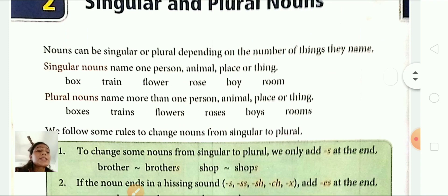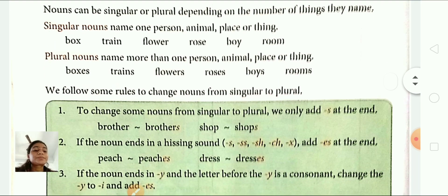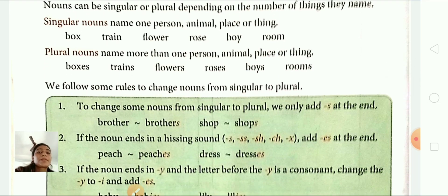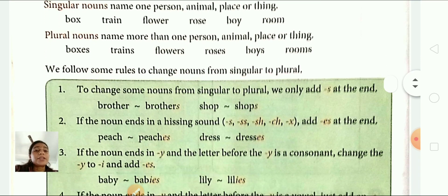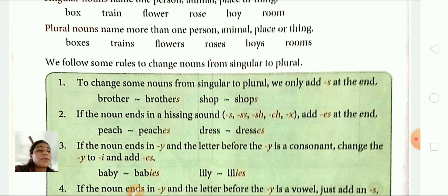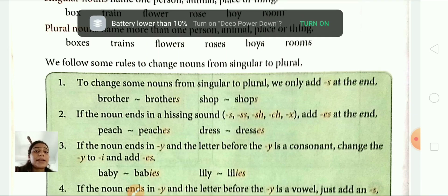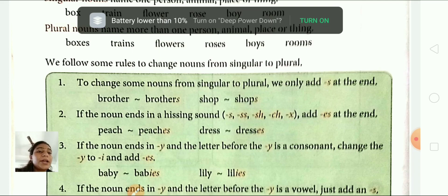You know students, when converting singular nouns into plural nouns, we follow some patterns, some rules. Let's learn about this. First, to change some nouns from singular to plural, we only add S at the end. Adding S is the most common rule to change singular nouns to plural nouns. Here we have some examples: brother, brothers; shop, shops.